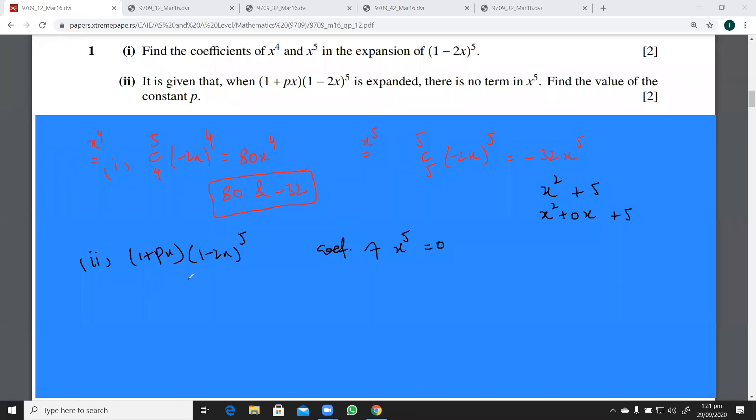We shall only be interested in the terms in x⁵ in this expansion. So this is (1 + px), and using part one's working, I will say this is 80x⁴ - 32x⁵. Now, are you clear why we just need these two terms here? Because